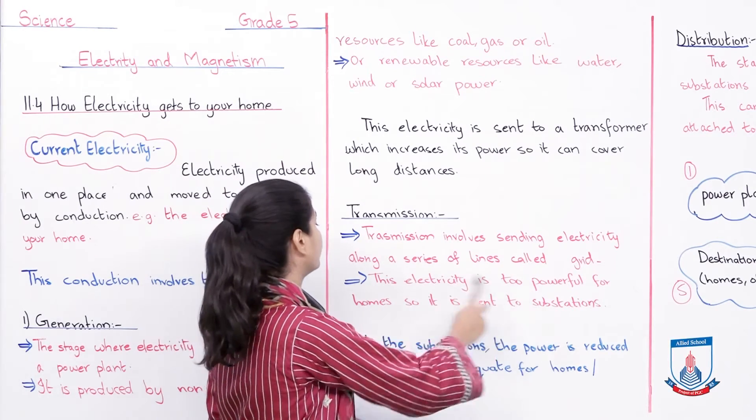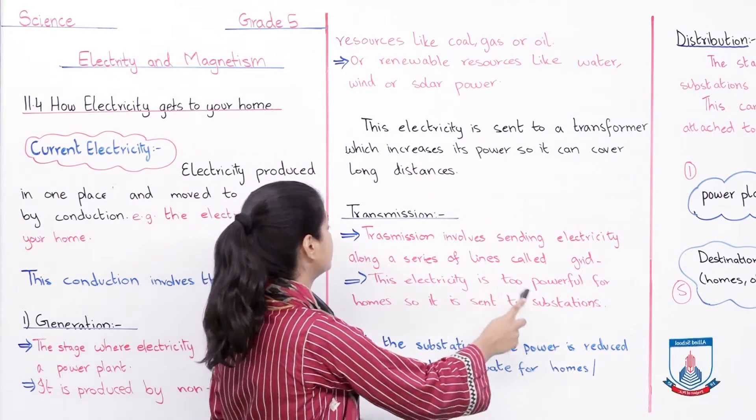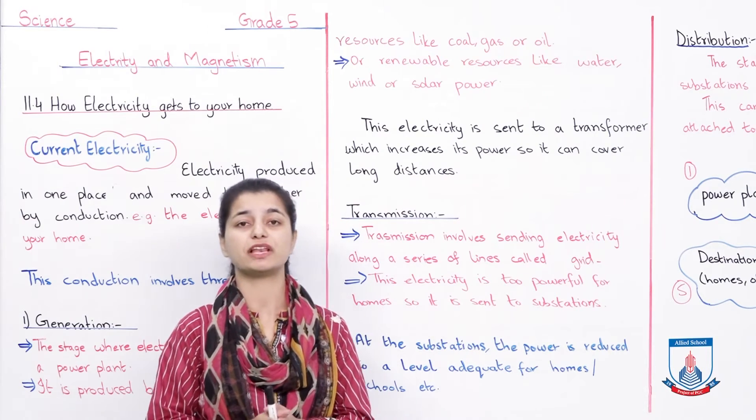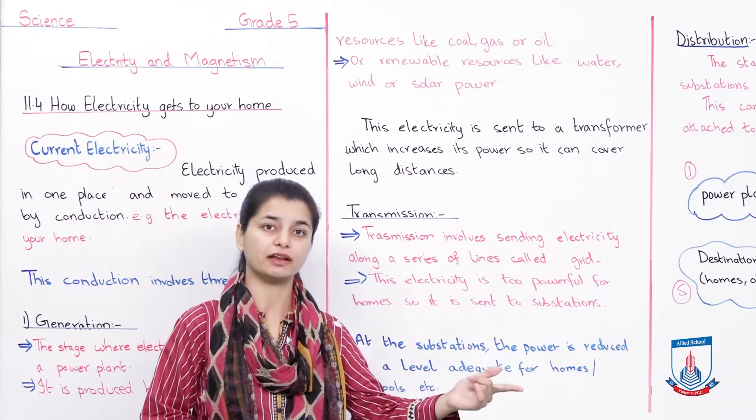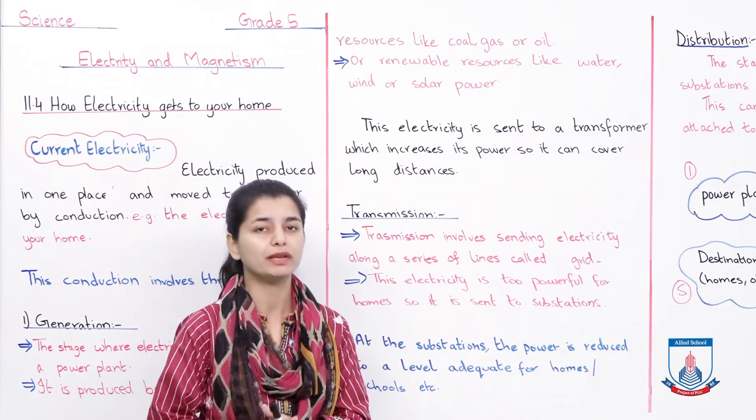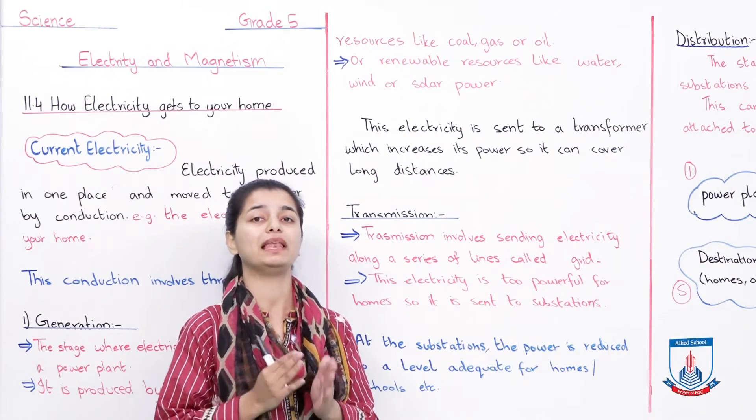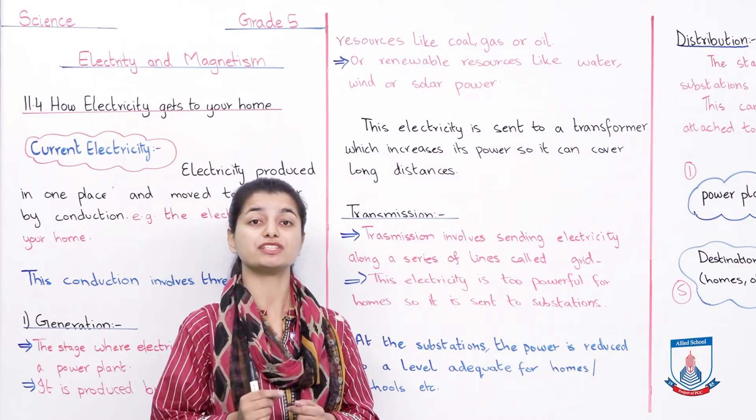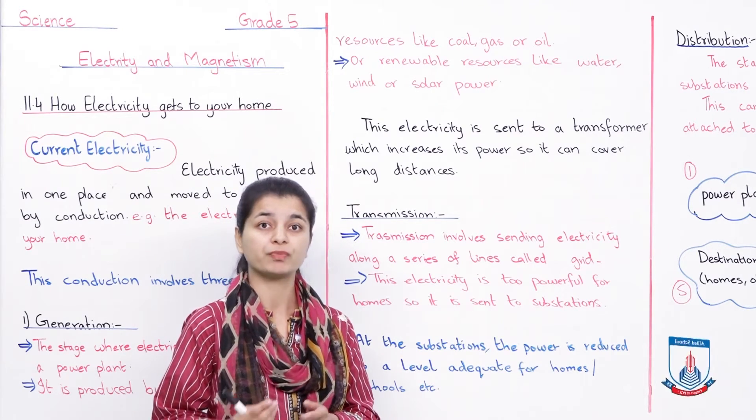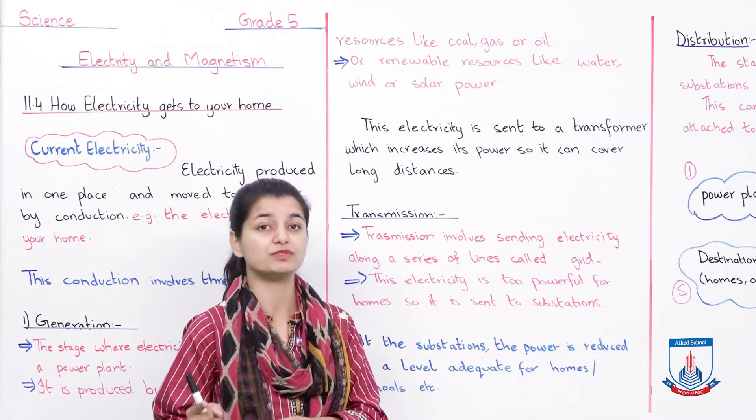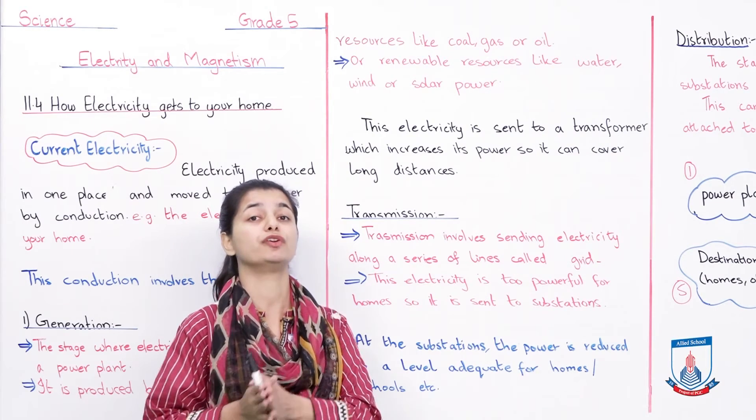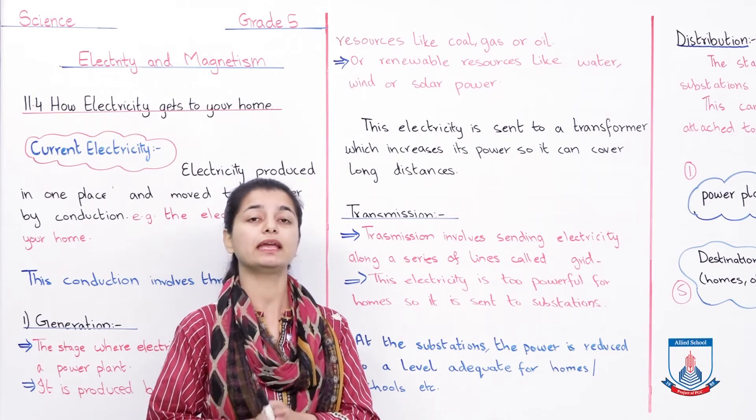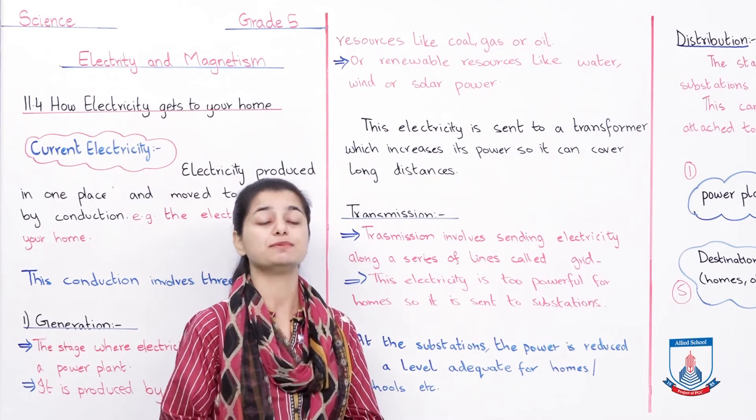This electricity is too powerful for homes, so it is sent to substations. First, electricity goes to the transformer, then during transmission through the electric grid, it accumulates there. Then you don't send it directly to houses because it's too powerful. You can't directly send it to homes or there would be electrocution issues. Instead, you send it to substations.